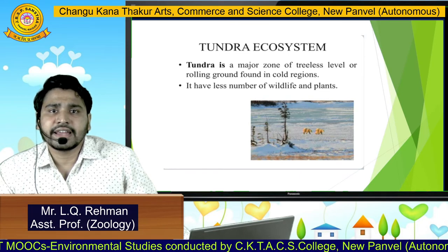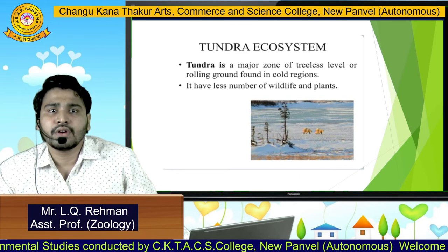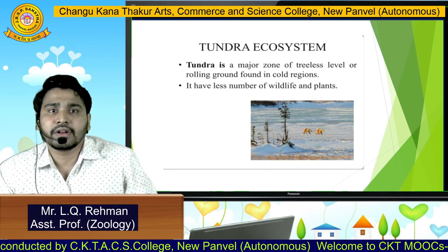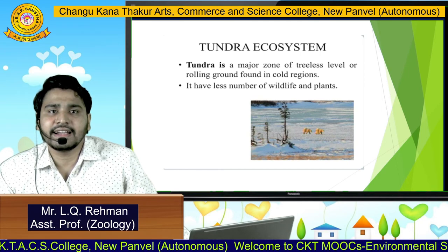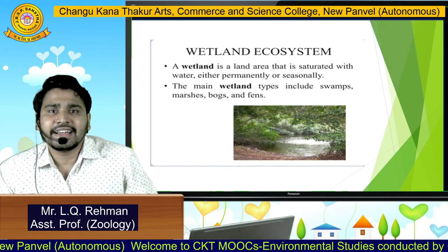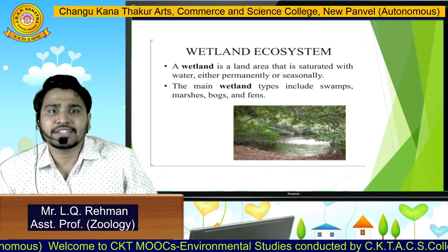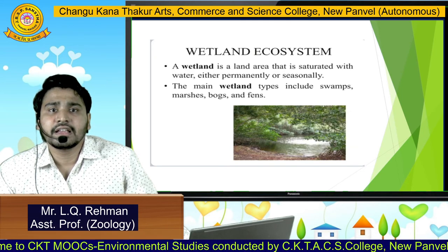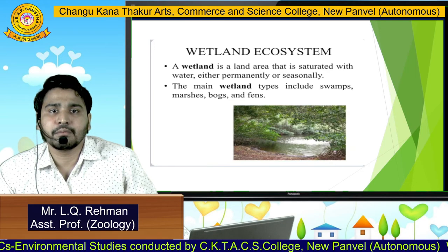Next is tundra ecosystem. Tundra is a major zone of treeless level or rolling ground which is found in cold regions, and it has very few wildlife and plants. Next is wetland ecosystem. It is basically a land area that is saturated with water either permanently or seasonally. The main wetland types include swamps, marshes, bogs, and fens.